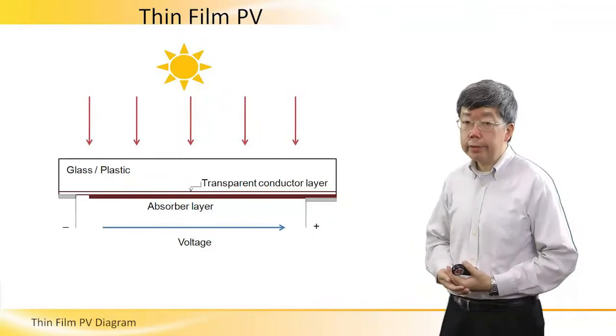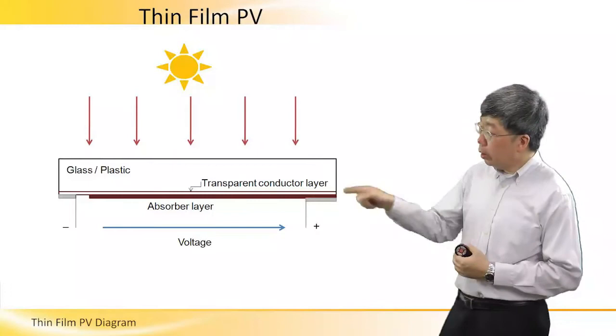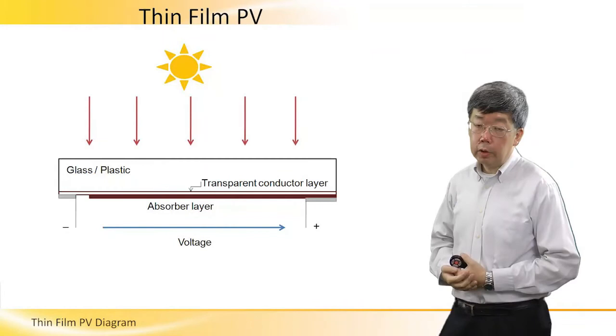But basically, this is where all the PV action takes place. As a result of that, you get an electrical voltage indicated by the blue arrow.